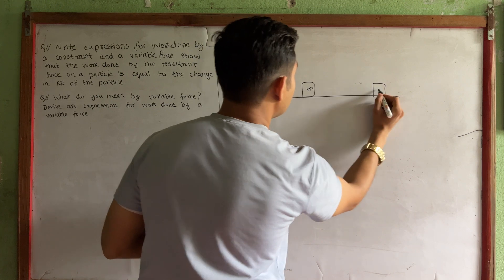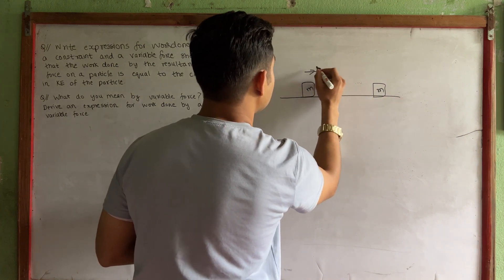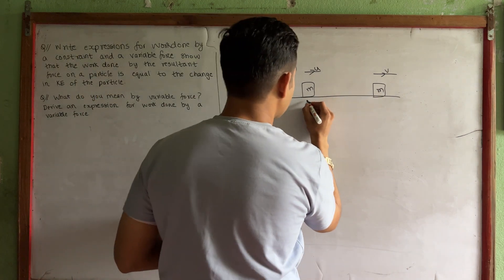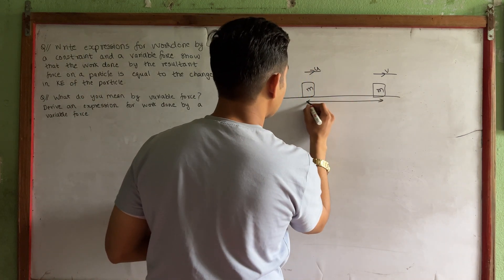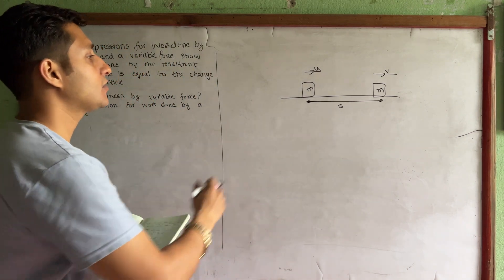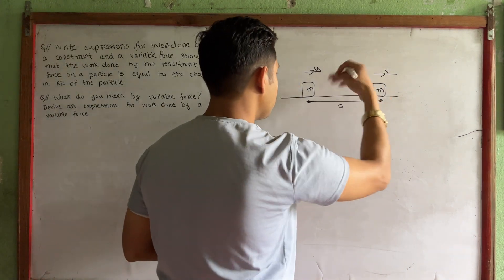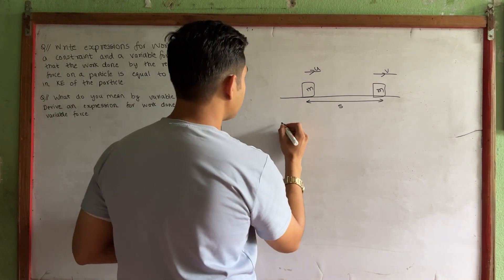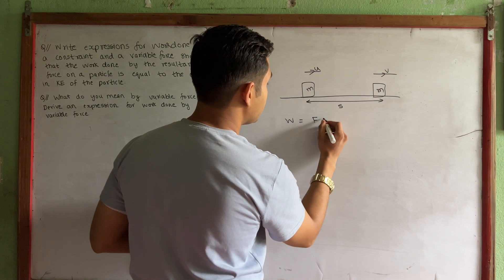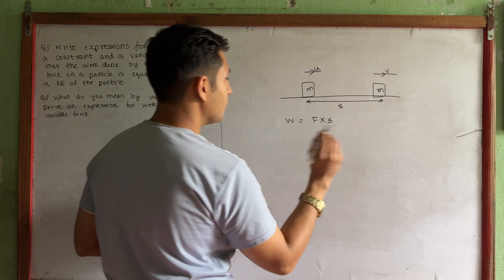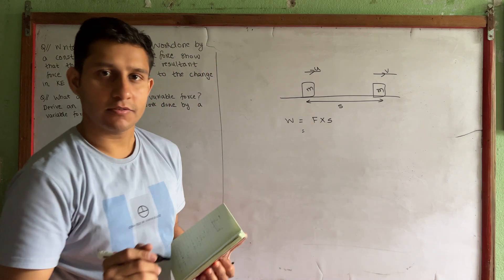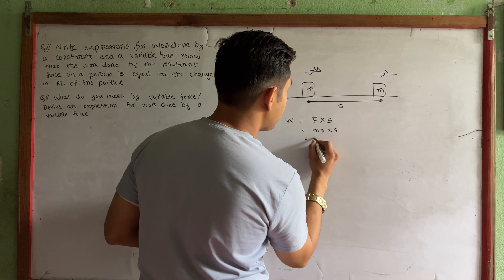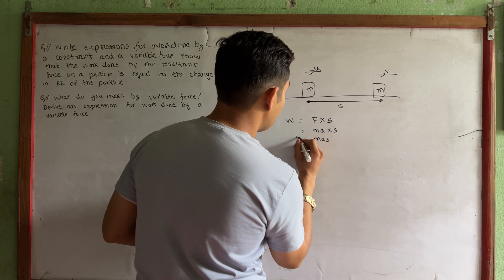Let's make a diagram. We have a mass M with initial velocity U and final velocity V, covering a displacement S. From this setup, the work done formula is F into S, and force equals M times A, so work done equals M times A times S. This is equation 1.